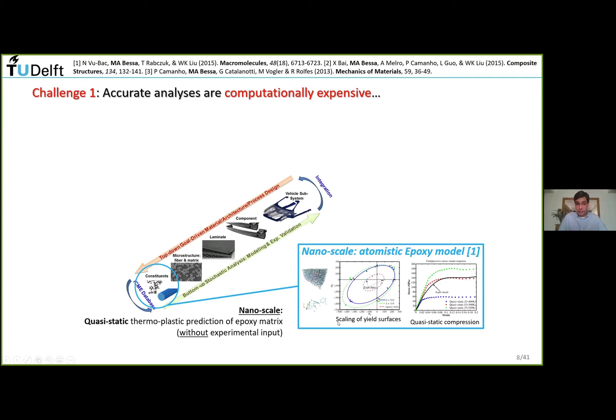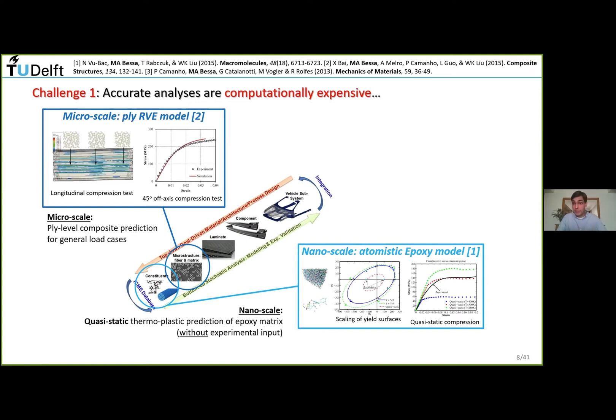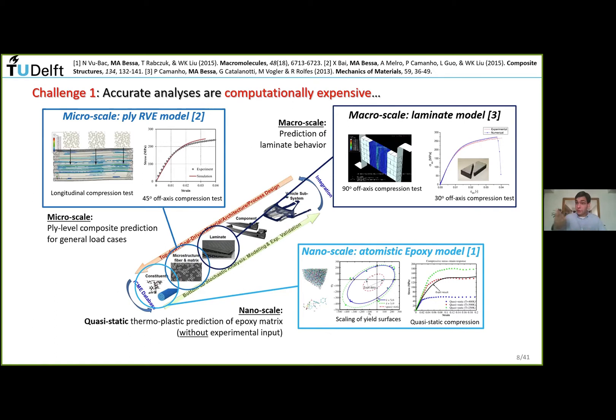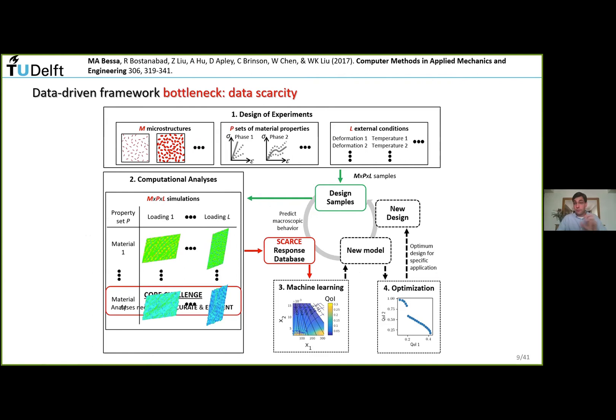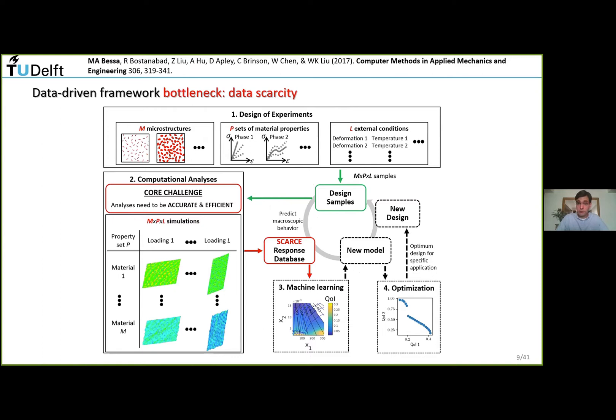The first challenge is data scarcity. If we want to predict the behavior of a material or structure, we know one thing: if we want to be accurate, we're also usually very computationally expensive. These are costly simulations. For example, atomistic scale simulation can take about one day in a supercomputer. A microscale simulation can take five days to compute just one design under one loading condition.